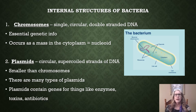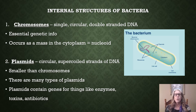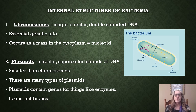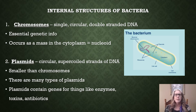Another structure we find inside the bacterial cell is called a plasmid. Plasmids are represented in the picture as tiny circles — these are circular, supercoiled strands of DNA. One bacterial cell could have many plasmids, and they are much smaller than chromosomes. Plasmids contain genes for things like enzymes, toxins, and antibiotic resistance. Think of the genes on plasmids as extras — extra molecules they can produce as a result of having that plasmid.